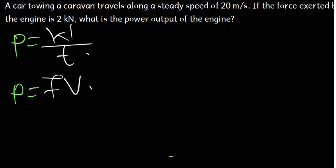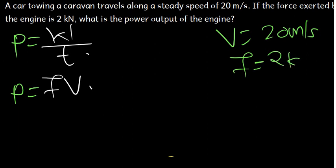Now, let's see the data which we've been given. We have been given the velocity as 20 meters per second. We have been given the force as 2 kilonewtons. Kilo is 1000. To convert kilonewtons to newtons, we need to do 2 times 1000. So 2 times 1000 is 2000 newtons.